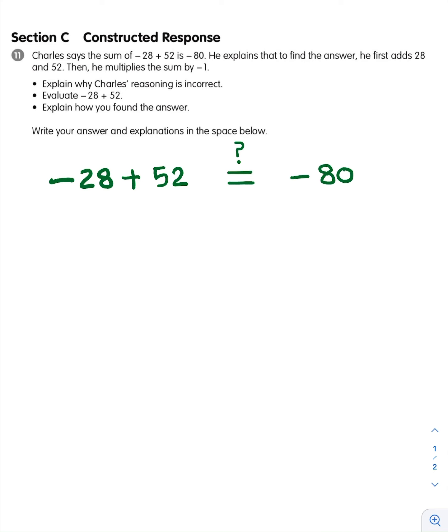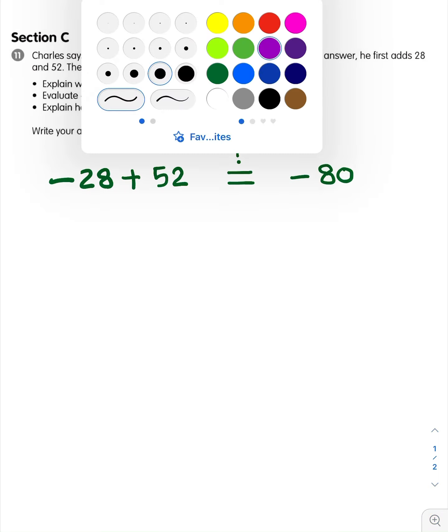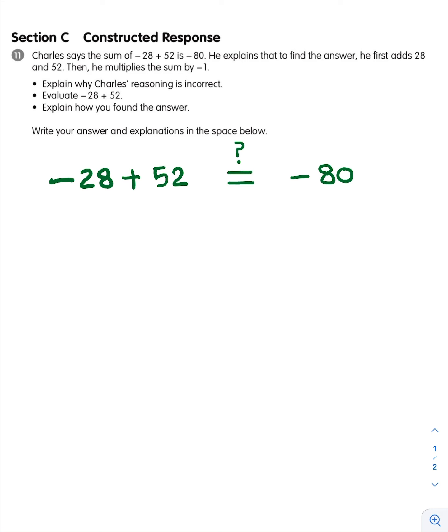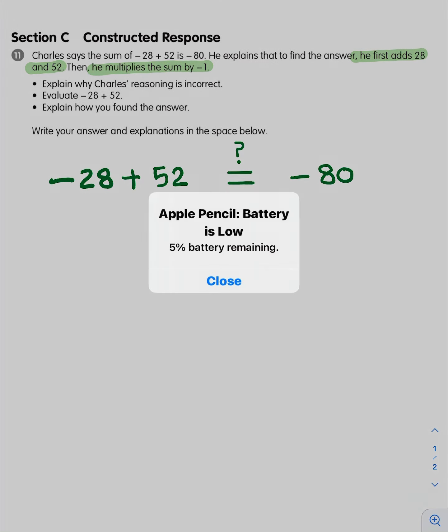Okay, let's see. Let's read further. Remember, Charles explains. So Charles explains that to find the answer, he first adds 28 and 52. So he first adds 28 and 52, and then he multiplies the sum by negative one.